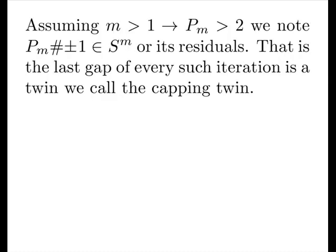Assuming M is bigger than 1, implying the current prime is greater than 2, we note the current primordial plus or minus 1 is in RS^m or its residuals. That is, the last gap of every such iteration, the twin, we call the capping twin.